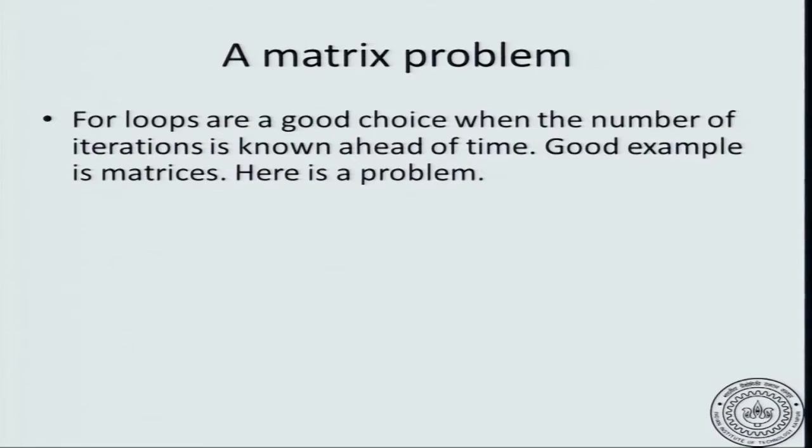In this session, we will use the for loop to code up a matrix problem. We have seen the while loop and the do-while loop, and inside while loops we have written nested or double loops. Let us look at a for loop problem where the solution involves a nested loop. For loops are a good choice when the number of iterations is known in advance. A good example of such a condition is when you program for matrices, because the dimensions of the matrices are known in advance.